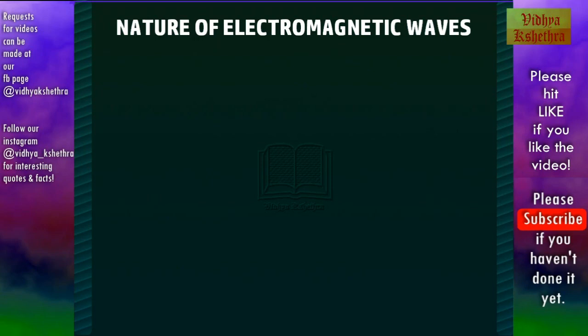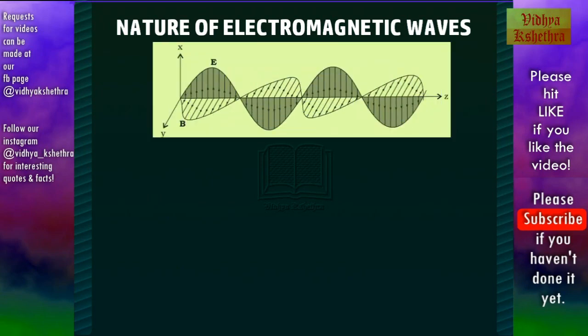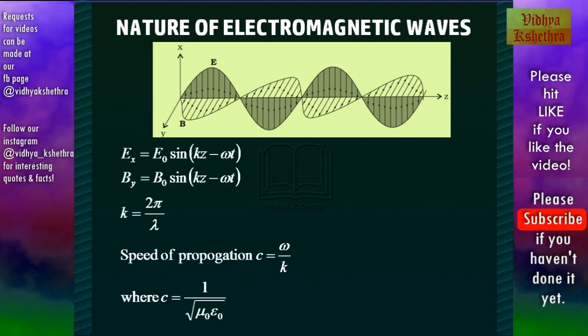Now we can see the nature of electromagnetic waves. Again, from the diagram, the electric field and magnetic field are perpendicular to each other and also to the direction of propagation. The equation for propagation of the electric field along the x-axis is given by Ex = E₀ sin(kz − ωt), where k is known as the propagation constant, related to the wavelength by k = 2π/λ, the magnitude of the propagation vector giving the direction of propagation.